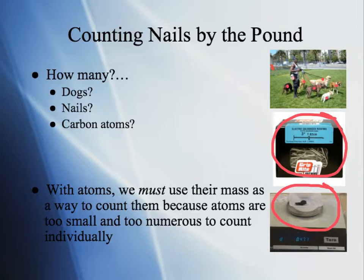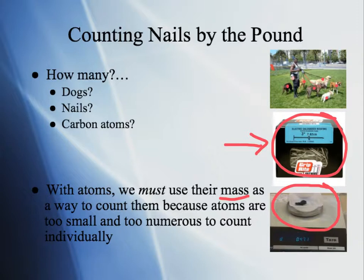So it's going to be a lot harder to count them — we can't count them by physically looking at them. What we do is count them by their mass. In fact, if you go to a hardware store and look for nails, they actually sell them by their mass as well — that's why this page is called 'Counting Nails by the Pound.' They sell nails by the pound: one pound box, five pound box, ten pound box. So we can count the number of nails like we count the number of carbon atoms in that dish, by its weight.